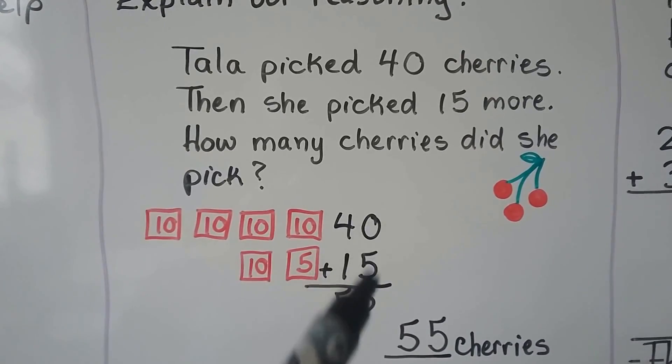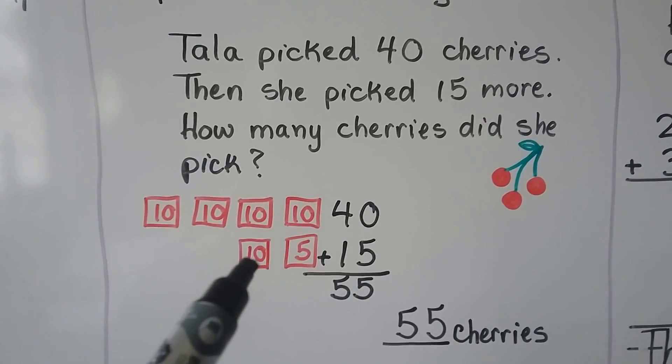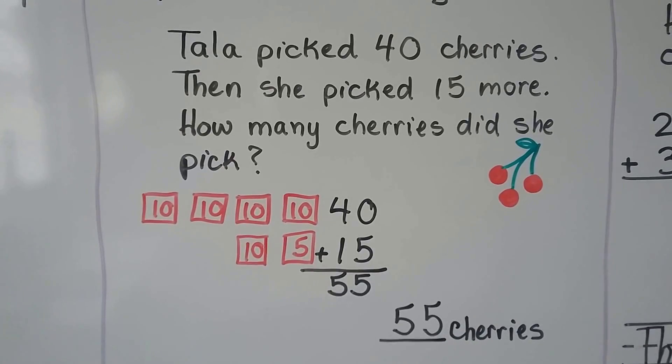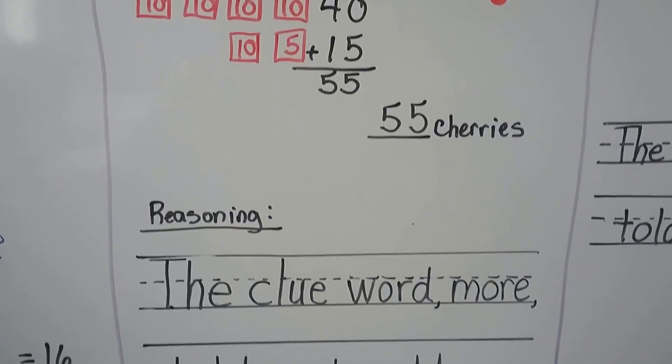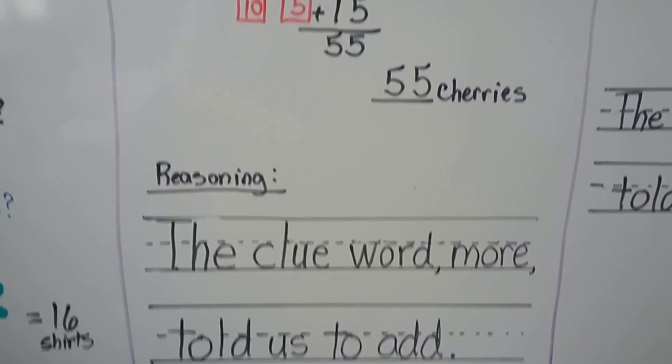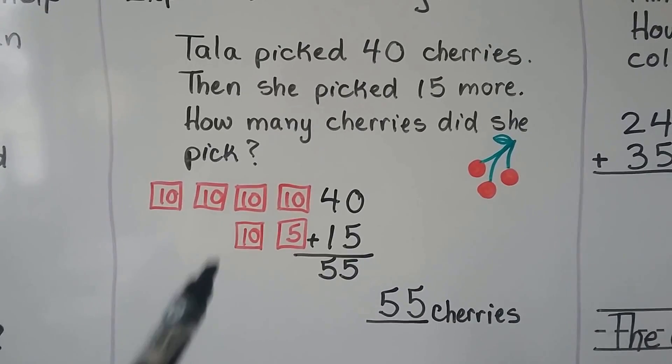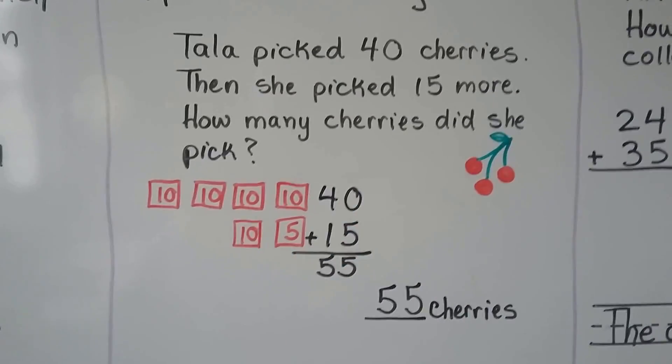The ones place has a five and the tens place has one, two, three, four, five tens. That's fifty-five cherries. Our reasoning is the clue word more told us to add. She picked forty cherries then she picked fifteen more that told us to add.